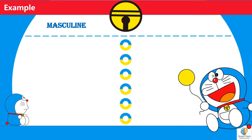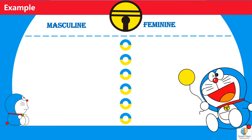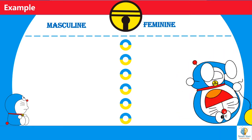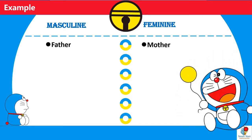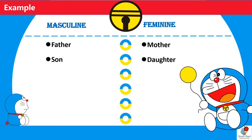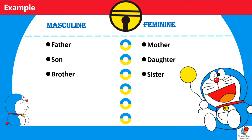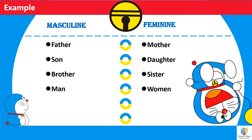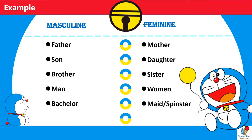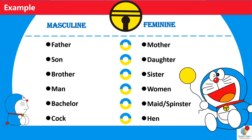Now we will see some examples of Masculine and Feminine Gender. Father, mother, son, daughter, brother, sister, man, woman, bachelor, maid or spinster, cock, hen.